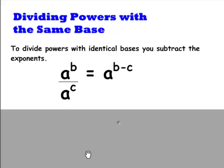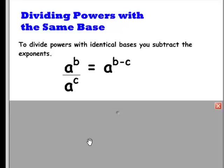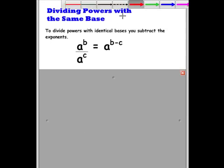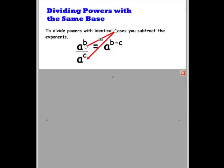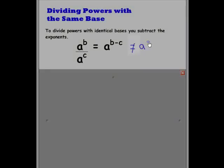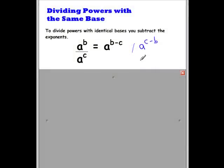Now let's take a look at the actual rule for dividing powers with the same base. When we have powers with identical bases — that means both bases are the same, A and A — we simply subtract the exponents and keep the same base. So we keep our base of A, and we take our exponent B from the numerator and subtract C from the denominator. It's important that you do it in that order and not the other way around. A to the power B minus C is not equal to A to the power C minus B — those are not the same.